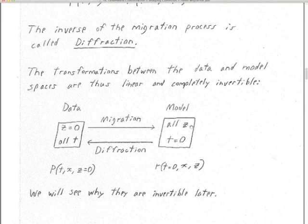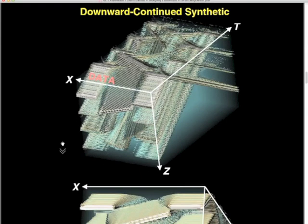When you model using diffraction, you start with a geologic model and diffract it into zero offset data using the inverse migration. You don't get a full set of real data — it doesn't have elastic waves and it doesn't have multiple reflections. But whatever you're missing, you only lose it once. If you re-migrate that diffracted synthetic and then re-diffract it, you'll get exactly the same thing. Claerbout calls this an idempotent transformation.